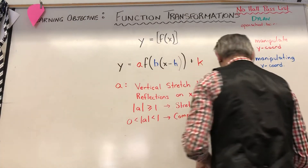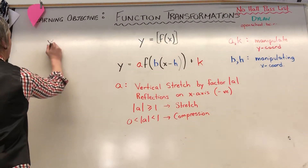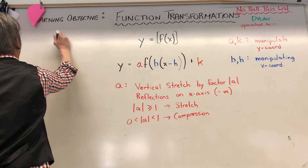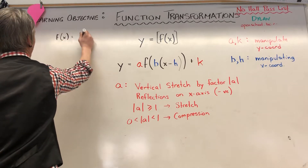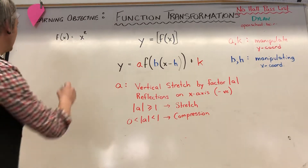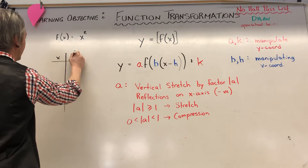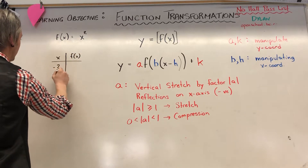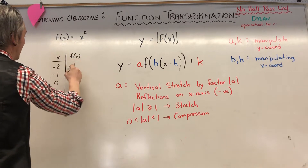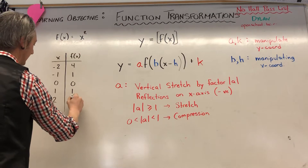Let's do a graph of f of x. Imagine f(x) = x². If I make a table of values with x: −2, −1, 0, 1, 2, then f of x gives: when x is −2, it pumps out 4; −1 pumps out 1; 0 squared is 0; 1 squared is 1; 2 squared is 4.